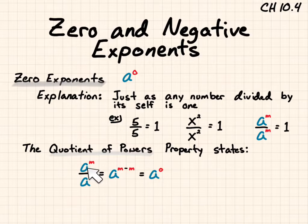Therefore, if a to the m over a to the m equals 1, and it also equals a to the zero, a to the zero must also equal 1.